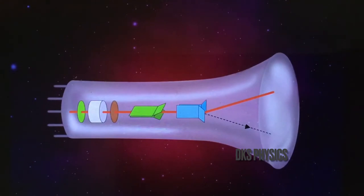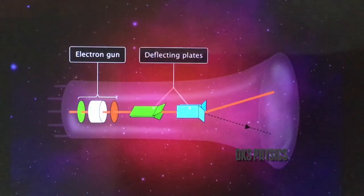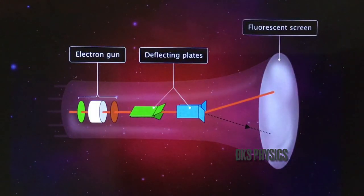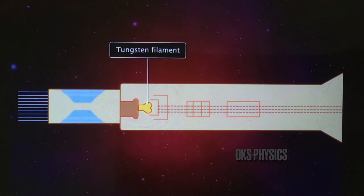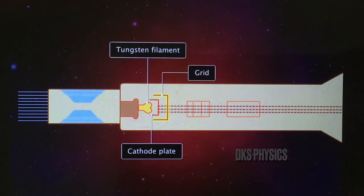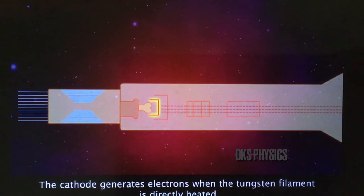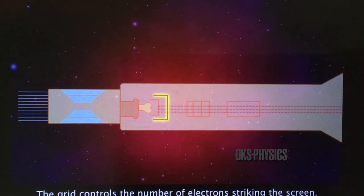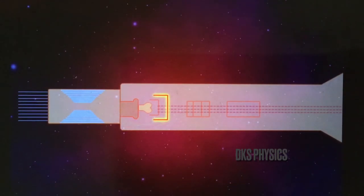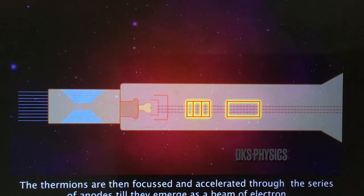The three main components of a cathode ray tube are an electron gun, deflecting plates, and a fluorescent screen. An electron gun has a tungsten filament, an electron-emitting cathode plate, a series of grids made of fine wire cores kept at a positive potential, and a series of anodes. The cathode generates electrons when the tungsten filament is heated. When electric signals are fed to the grid, it controls the number of electrons striking the screen. The thermions are then focused and accelerated through the series of anodes until they emerge as a beam of electrons.